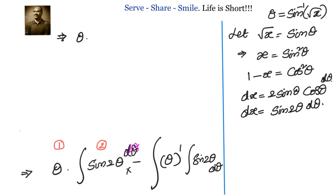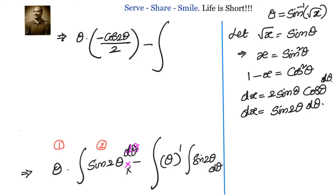Applying the formula: the integral of sin2θ is −cos2θ/2. So we have θ · (−cos2θ/2), minus the integral of (derivative of θ) × (−cos2θ/2). The derivative of θ is 1, so we need to find the integral of −cos2θ/2.